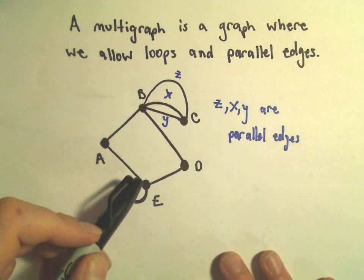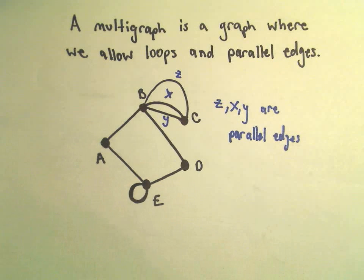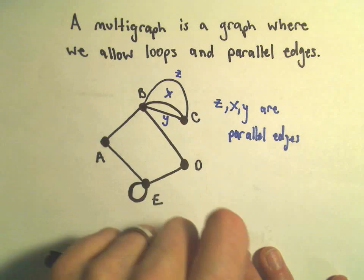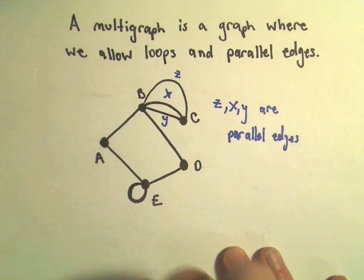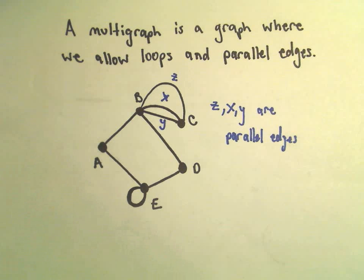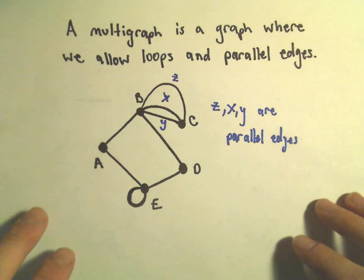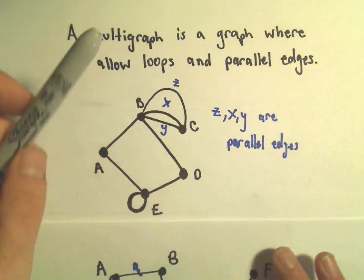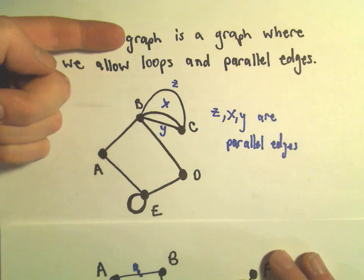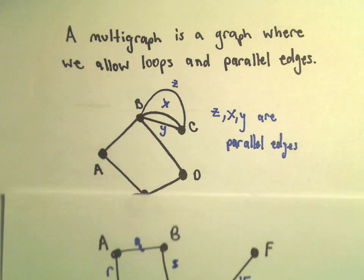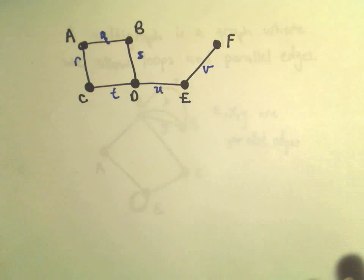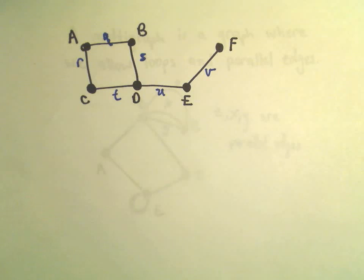A loop is just a vertex that has an edge back to itself. Notice from vertex B to C we have these 1, 2, 3 edges — I've labeled them as Z, X, and Y — so we would just say Z, X, Y, those are what are called parallel edges; we've got multiple edges. One other thing to notice: a regular graph is really just a special case of a multigraph, so that's worth keeping in mind if you're taking a graph theory class or a discrete math class.